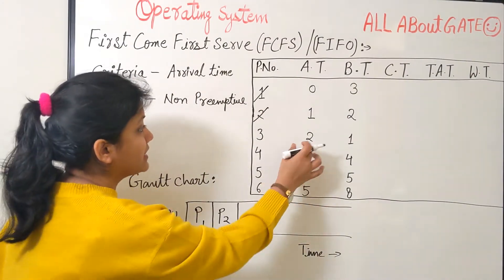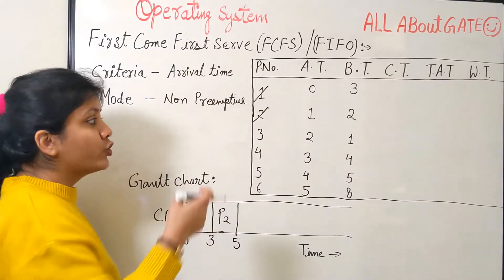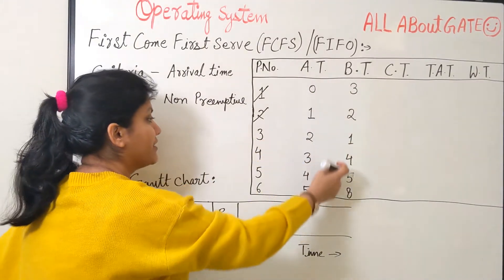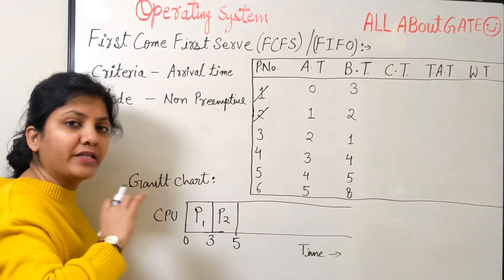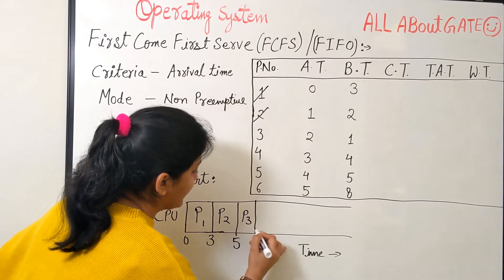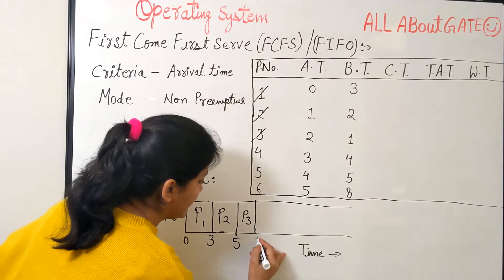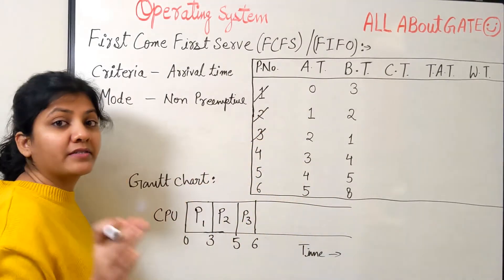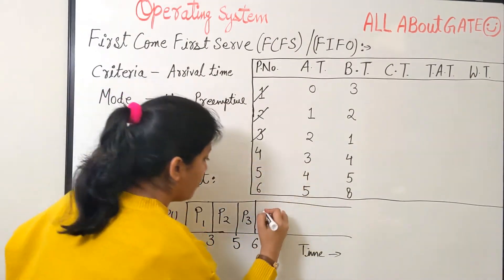In this example the processes conveniently arrive one after another at times 0, 1, 2, 3, 4, and 5, so we can schedule them in order. P3 gets scheduled next — it needs 1 burst. 5 plus 1 is 6, so P3 runs from 5 to 6 and is done.